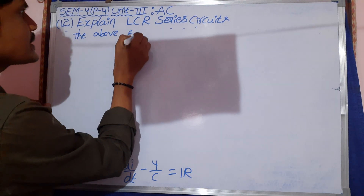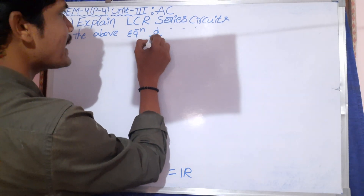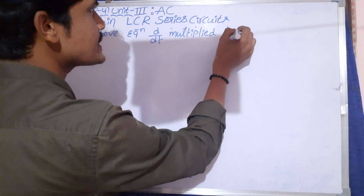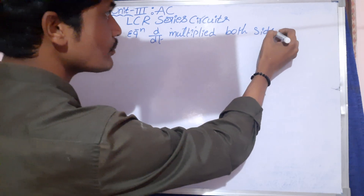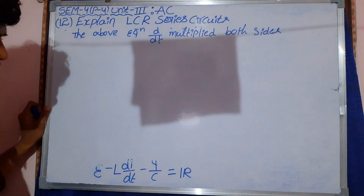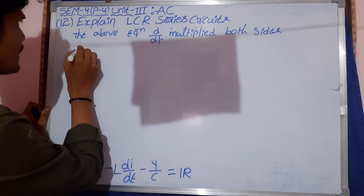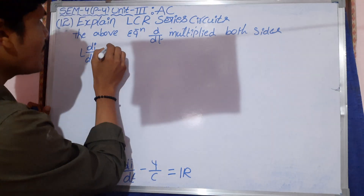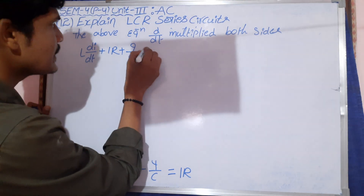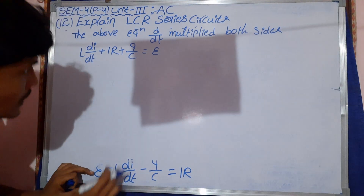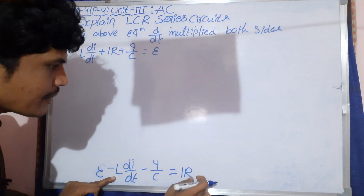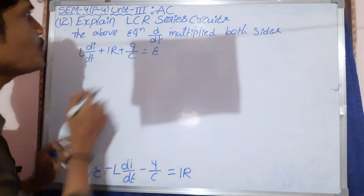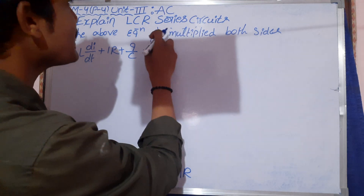Taking the above equation and multiplying both sides by d/dt, so that means L dI/dt plus IR plus Q/C equals epsilon. This equation changes: epsilon minus L dI/dt on the left side gives plus L dI/dt plus RI plus Q/C. The above equation multiplied on both sides by d/dt.